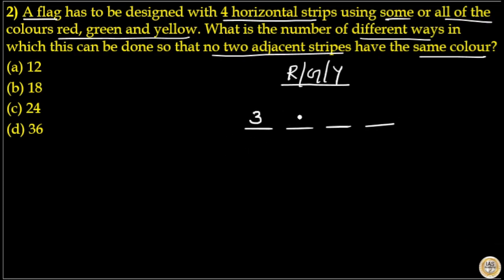In the second stripe you have only two colors remaining, because if you choose red in the first stripe you cannot choose red in the second stripe, since no two adjacent stripes can have the same color. So you can fill the second stripe in two ways. Similarly, in the third stripe you cannot choose the color of the second stripe, so you have two colors remaining and can fill the third stripe in two ways.